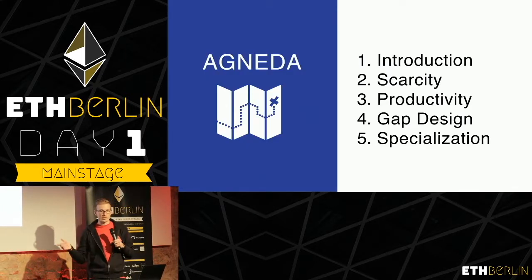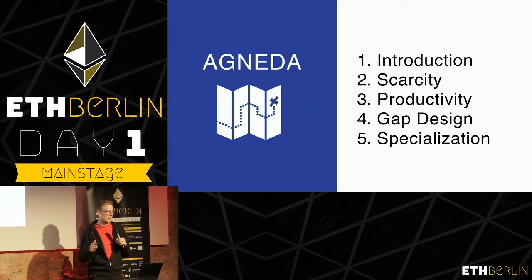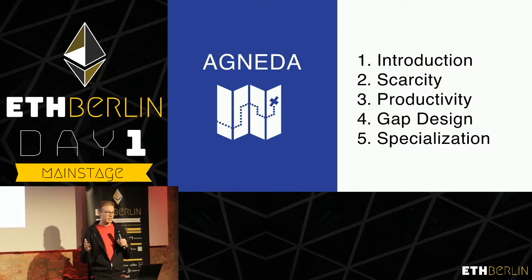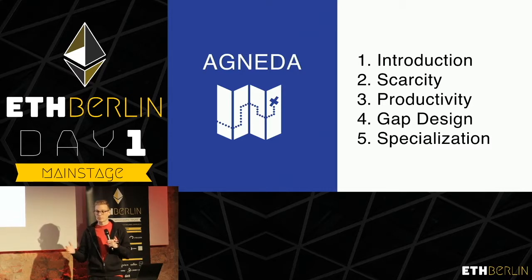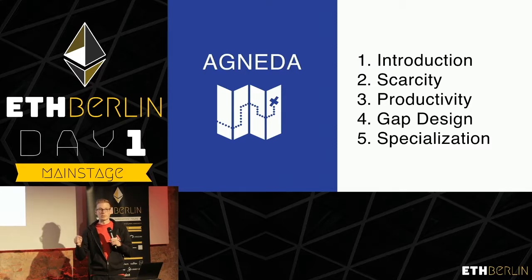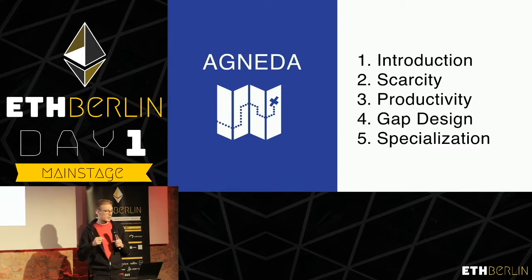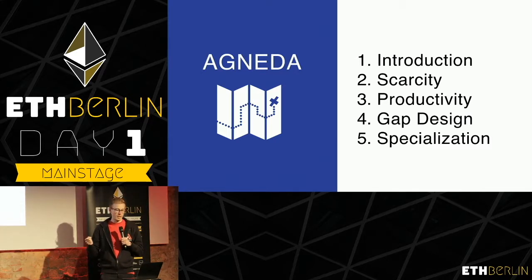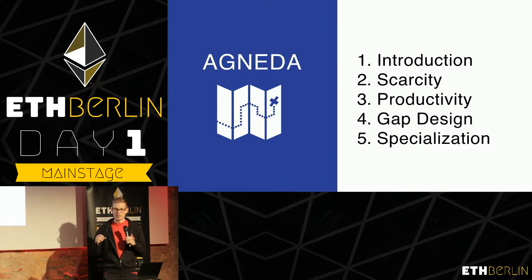The agenda for today is to start with an introduction to NFTs, just to catch everyone up to speed. I think probably most of you guys are familiar with them, but this is the only talk on non-fungible tokens, so we're just going to begin there. Then we're going to talk about scarcity, which has been the pervasive model thus far, and we're going to look at three other strategies for designing utility with NFTs: using the NFT to be productive, using them to design over gaps in ecosystems, and to bind people together who have different specializations towards a common goal.